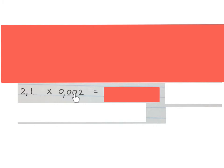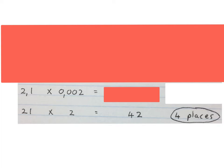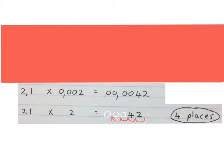The next question says 2,1 times 0,002. We count the places behind the comma: there are 1, 2, 3, 4 places behind the comma. We write four places and circle it. Then we take out the commas and do a normal multiplication sum — we just write 21 times 2. This normal multiplication sum's answer is 42. Lastly, we bring the comma back four places from behind, moving it 1, 2, 3, 4 places up. Please stop the video and tell yourself what the three steps were that we took.